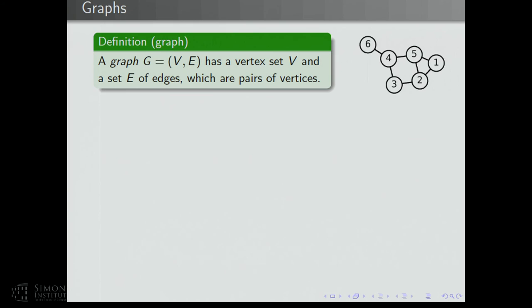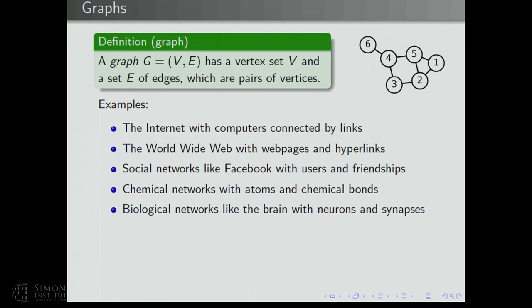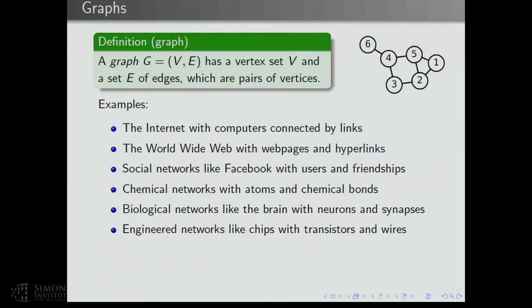Why from a real-world perspective should we care about graphs? There are some very important graphs that come up in real life: the Internet with computers connected by links, the World Wide Web with web pages and hyperlinks, social networks like Facebook with users and friendships, chemical networks with atoms and chemical bonds, biological networks like the brain with neurons and synapses, and engineered networks like integrated circuits with transistors and wires. Each of these examples has over a billion vertices. Understanding the structure of large graphs is a major both theoretical and applied challenge.